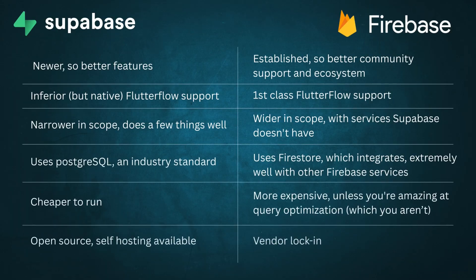Maybe this table will help a little. I want to point out that this table is an oversimplification and does reflect my own biases. Supabase is newer, so the features are slightly better, as opposed to Firebase being more established with better community support. As far as FlutterFlow goes, Firebase is definitely more baked in than Supabase. And Firebase is also wider in scope — you have services like push notifications that Supabase just doesn't have. But Supabase does have PostgreSQL, which is an industry-standard open source database that is very battle-hardened and well-tested. Firestore, honestly in my view, isn't as good a database, but it integrates super well with all the other Firebase services.